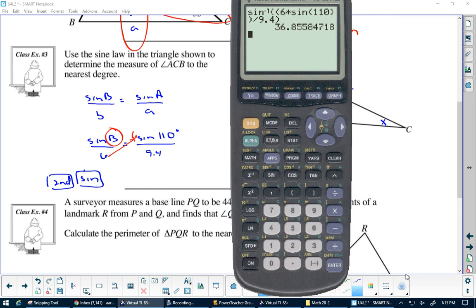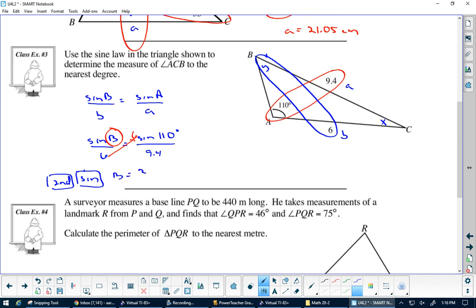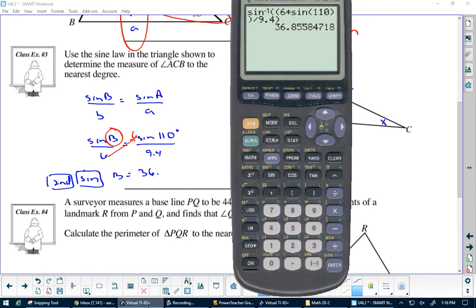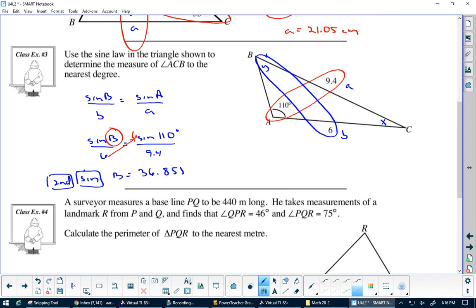So B equals 36.8558. Now I know this angle, so if I go 180 minus 110 minus 36.8558, I will get to the nearest degree should be 33 degrees.